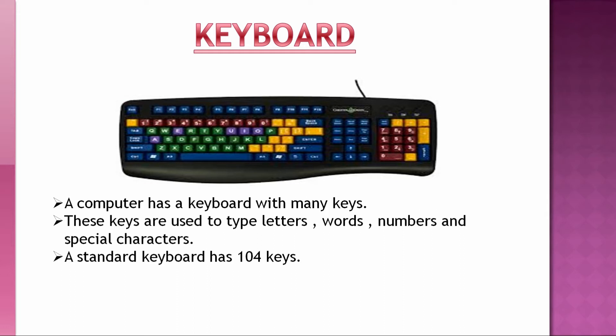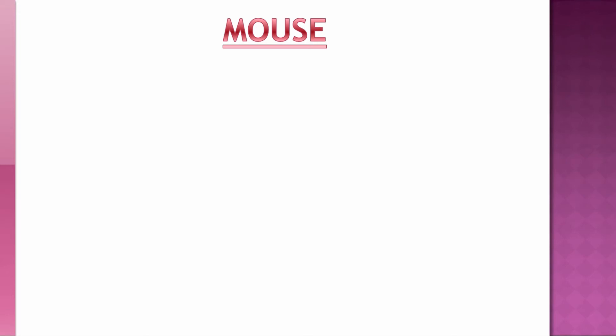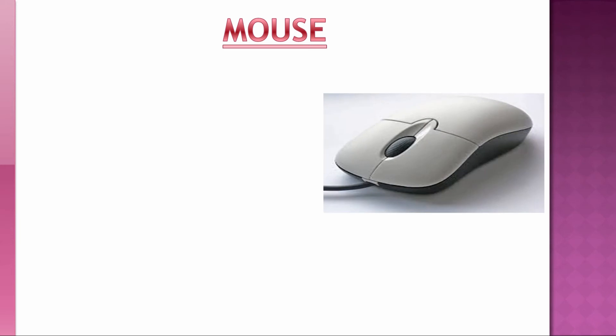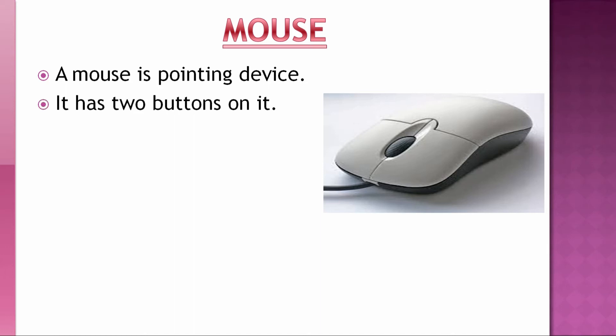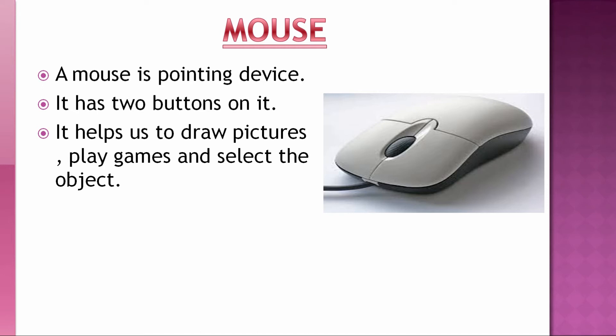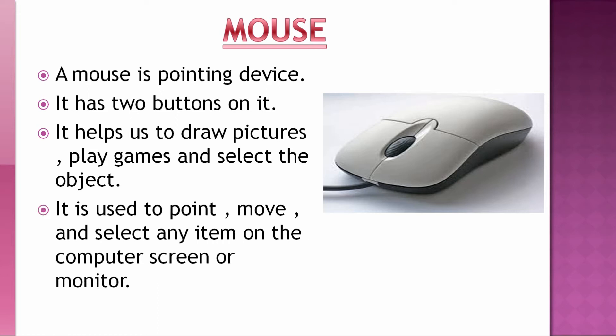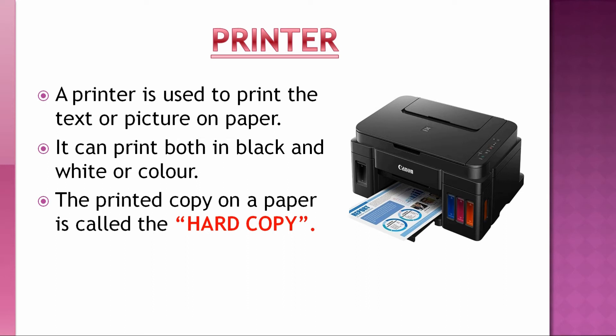Now the fourth part is mouse. This is the diagram of mouse. A mouse is a pointing device. It has two buttons on it. It helps us to draw pictures, play games, and select objects. It is used to point, move, and select any item on the computer screen or monitor.